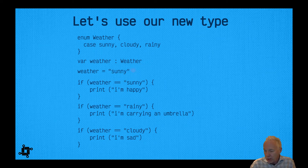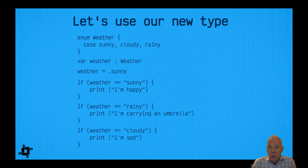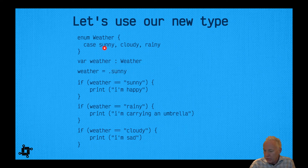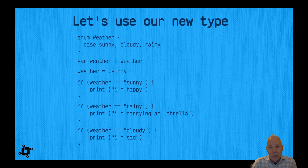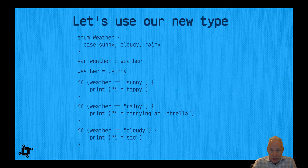Since weather is of type Weather, assigning it to a string won't work anymore. Instead we say weather equals dot sunny — the convention is to put a dot in front. Swift already knows it's of type Weather, and Weather has cases sunny, cloudy, and rainy. So dot sunny refers to the first enumeration case, and the compiler is fine with that. Similarly, the if condition becomes if weather equals dot sunny.